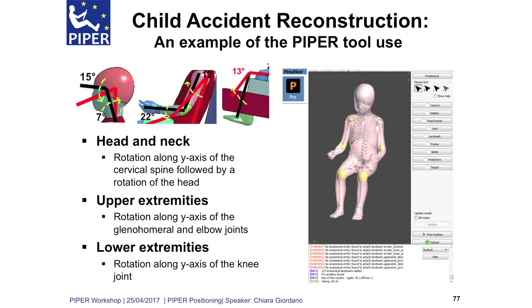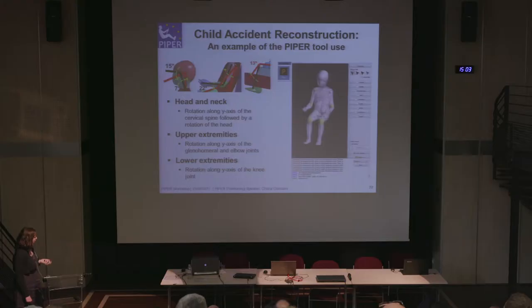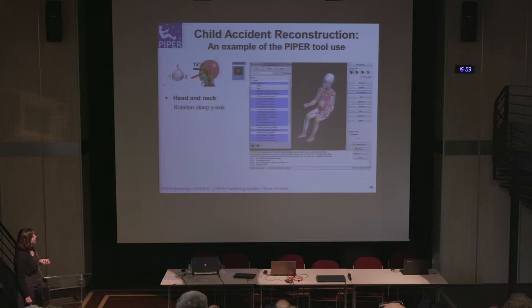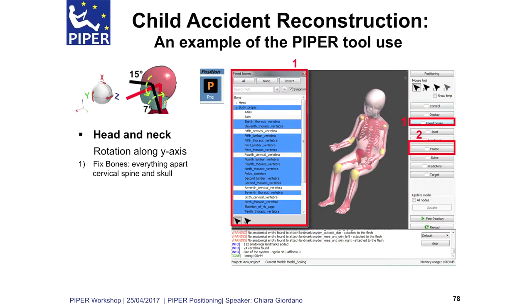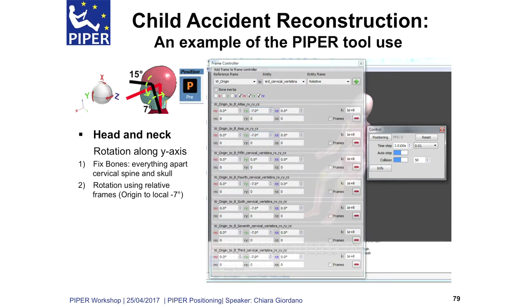After that, we move to the pre-positioning module. We are going to rotate head and neck along the Y-axis of the cervical spine, and then this rotation will be followed by a rotation of the head. We are going to rotate along the Y-axis the glenohumeral joint — the shoulder — and then the elbow joint. Finally, we are going to rotate the lower extremities along the Y-axis of the knee joint. As the previous presenter said, we first need to fix the bones. So as the first step, to move head and neck, we fix everything apart from the cervical spine and the skull. Then we click on frame-to-frame positioning, and we position our cervical spine with respect to the global frame, rotating by the Y-axis.